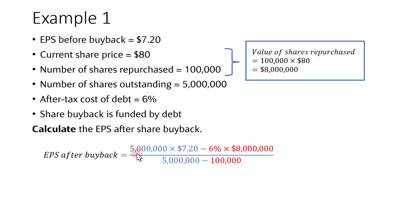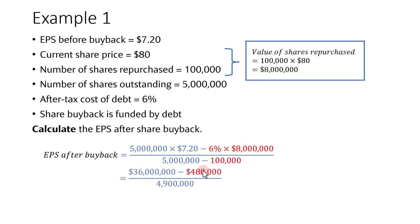The EPS after buyback would be the net income — which is 5 million shares times $7.20 — minus the after-tax interest expense, which is 6% times $8 million, divided by the number of shares outstanding (5 million) minus the number of shares repurchased (100,000). The net income or earnings is $36 million, the after-tax interest expense is $480,000, and the number of shares outstanding after buyback is 4.9 million. So the EPS after buyback would be $7.25, which is an increase over the EPS before the buyback.